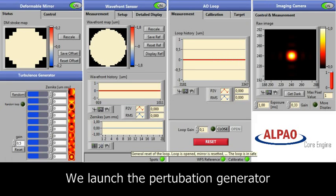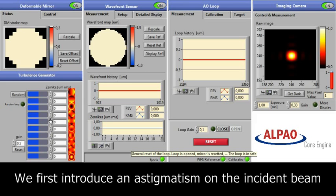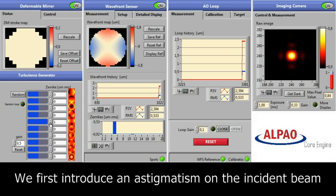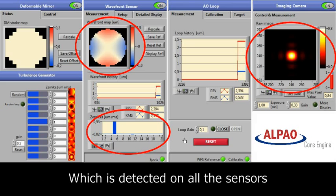Here we launch the turbulence generator, and as a first perturbation we introduce an astigmatism. To compensate for the perturbation, we close the loop.